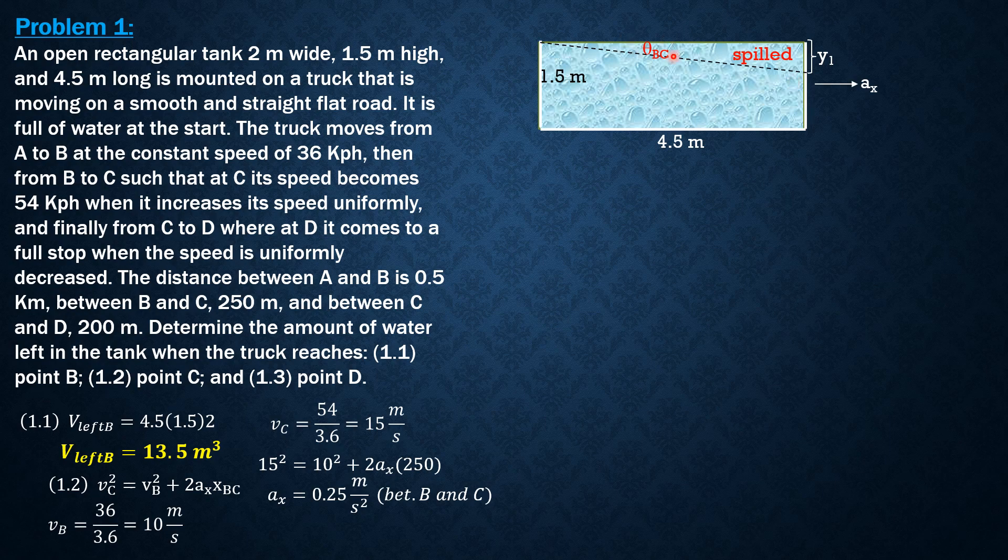Therefore, tan(theta_BC) = a_x, the acceleration between B and C, 0.25 meters per second squared divided by g, which is 9.81, and it is also equal to Y1 over 4.5 from the figure. So tan(theta_BC) is 0.25 over 9.81, also equal to Y1 over 4.5. So Y1 is equal to 0.1147 meter.